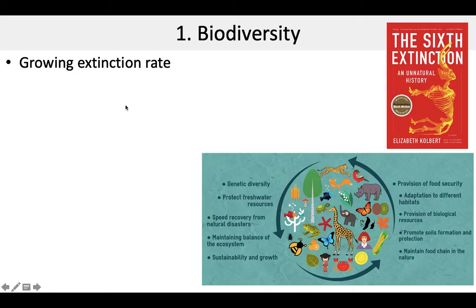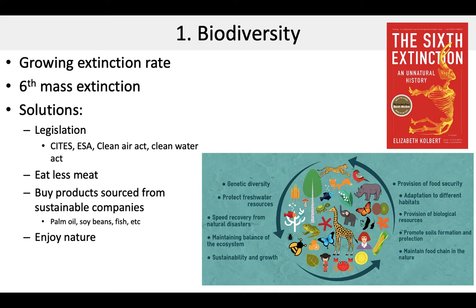The first indicator is biodiversity. In recent years, we're seeing a growing extinction rate as humans capitalize on the ecosystem services of various ecosystems. We're entering a sixth mass extinction where thousands of species are going extinct every year. There are a lot of solutions to preserving biodiversity, such as legislation — things we've already talked about, like the Convention on International Trade for Endangered Species as well as the Endangered Species Act, and also legislation like the Clean Air Act and Clean Water Act, which helps preserve the cleanliness of our air and water. We could also eat less meat, which will help preserve biodiversity.